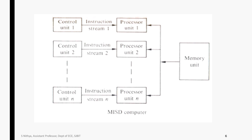The third architecture is MISD — Multiple Instruction Single Data stream. Here there are multiple instructions coming from multiple control units — Control Unit 1, Control Unit 2, up to Control Unit N — and a single data stream from the memory unit. Each control unit generates a different instruction stream, which is sent to the processor unit. The processor performs operations based on the single data generated by the memory unit, so multiple instructions execute on a single data stream.